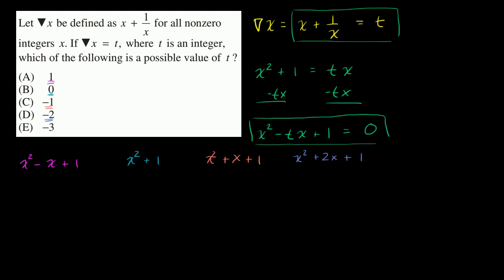And then if t is equal to negative three, you have x squared plus negative three, negative negative three, so that's plus three x plus one.